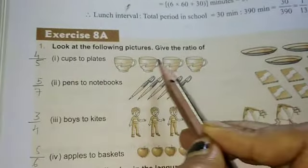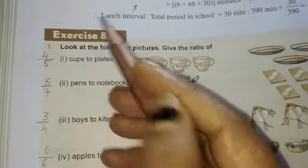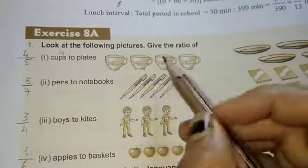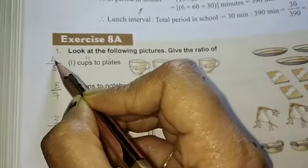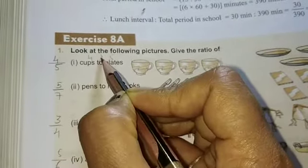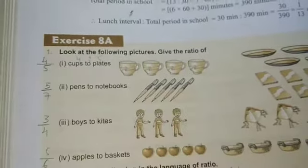One, two, three, four. So number of cups are four and the number of plates are one, two, three, four, five. Then the ratio is four by five or this is four colon five.